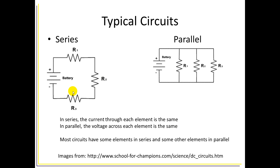Two typical configurations of circuits are series, like you see here on the left, and parallel, like you see here on the right. Series circuits connect one element, then the next, then the next in one loop. If you have a series circuit, the current through each element is the same — there's no place for it to branch off. So all of that current goes through R1, then R2, then R3, and the current through the battery is exactly the same as the current through any given element.